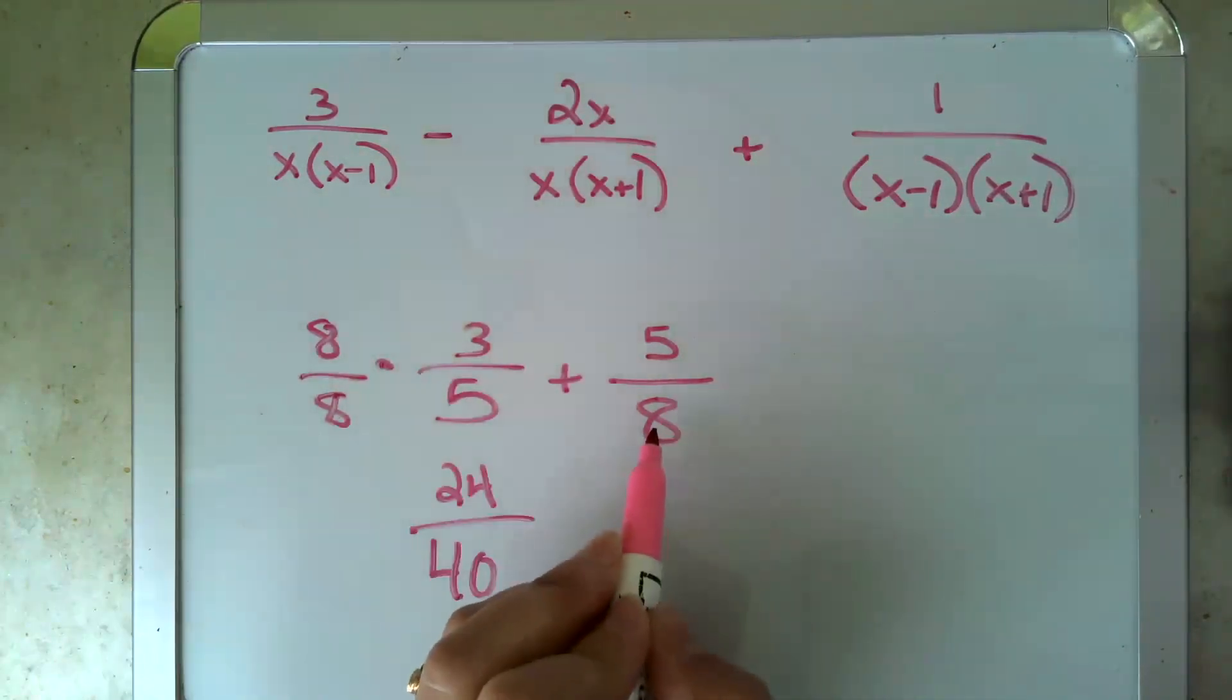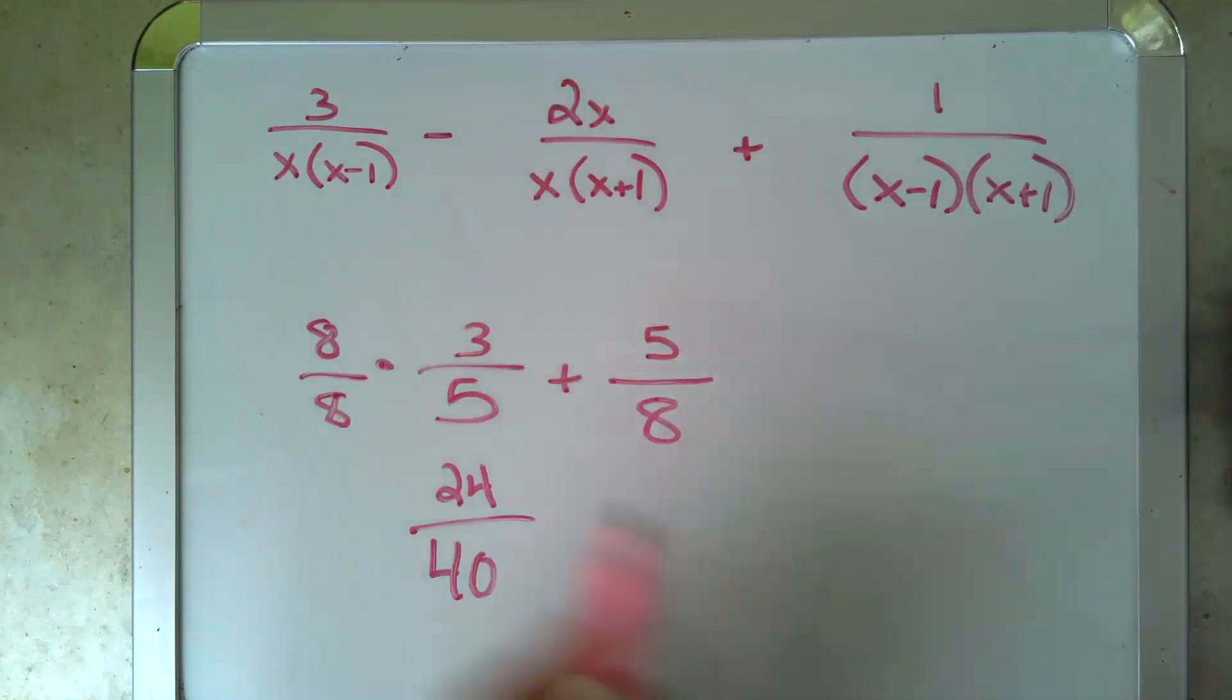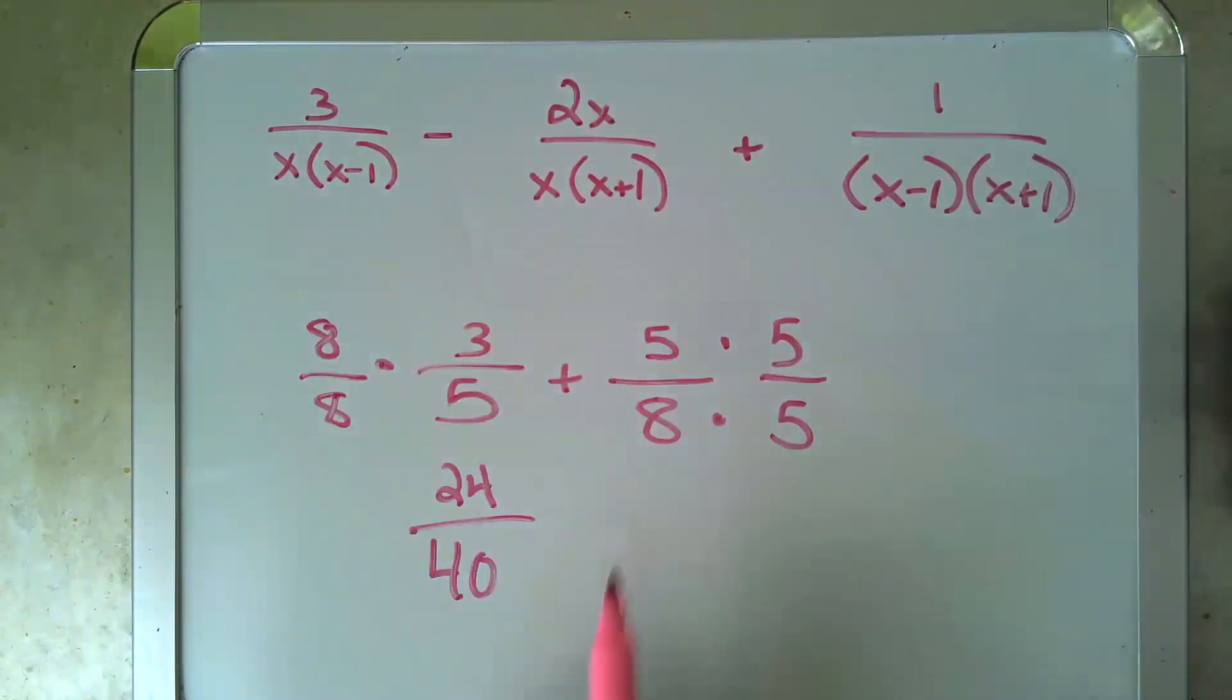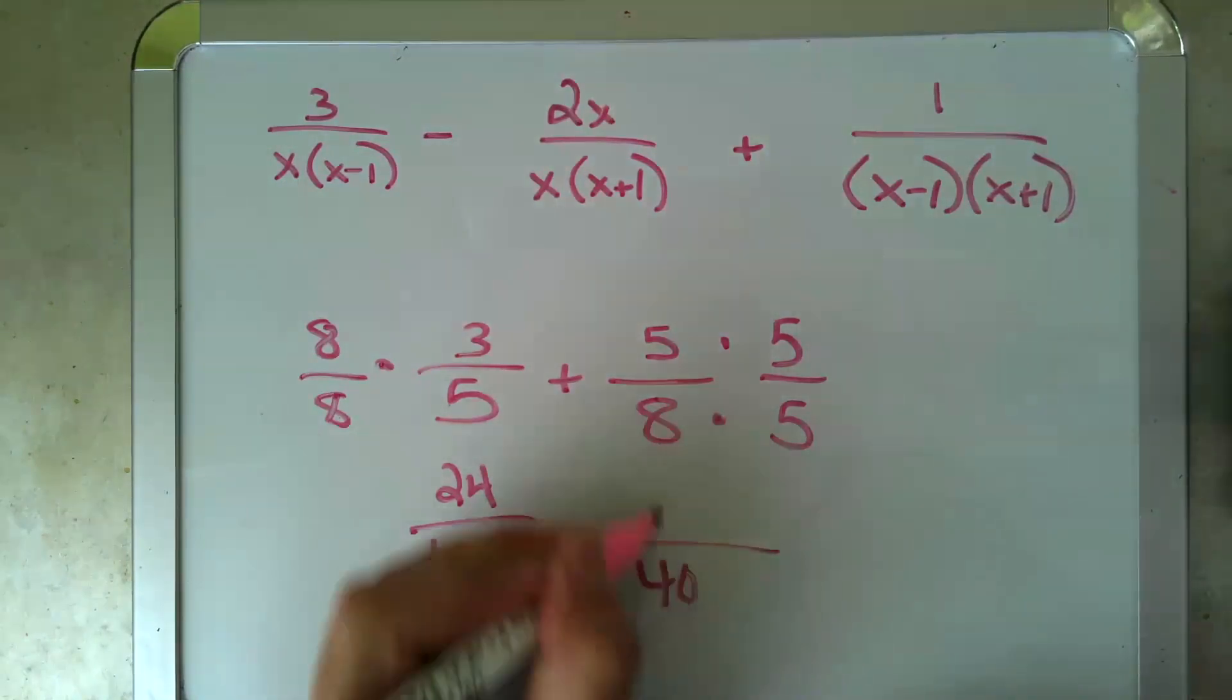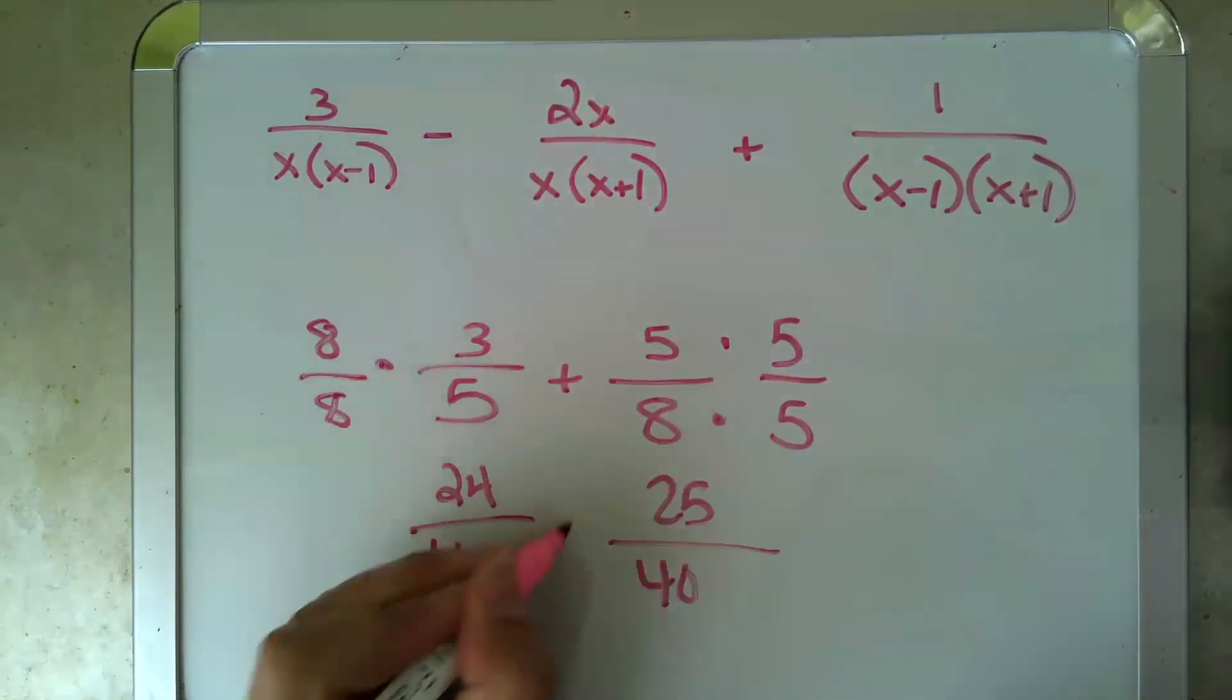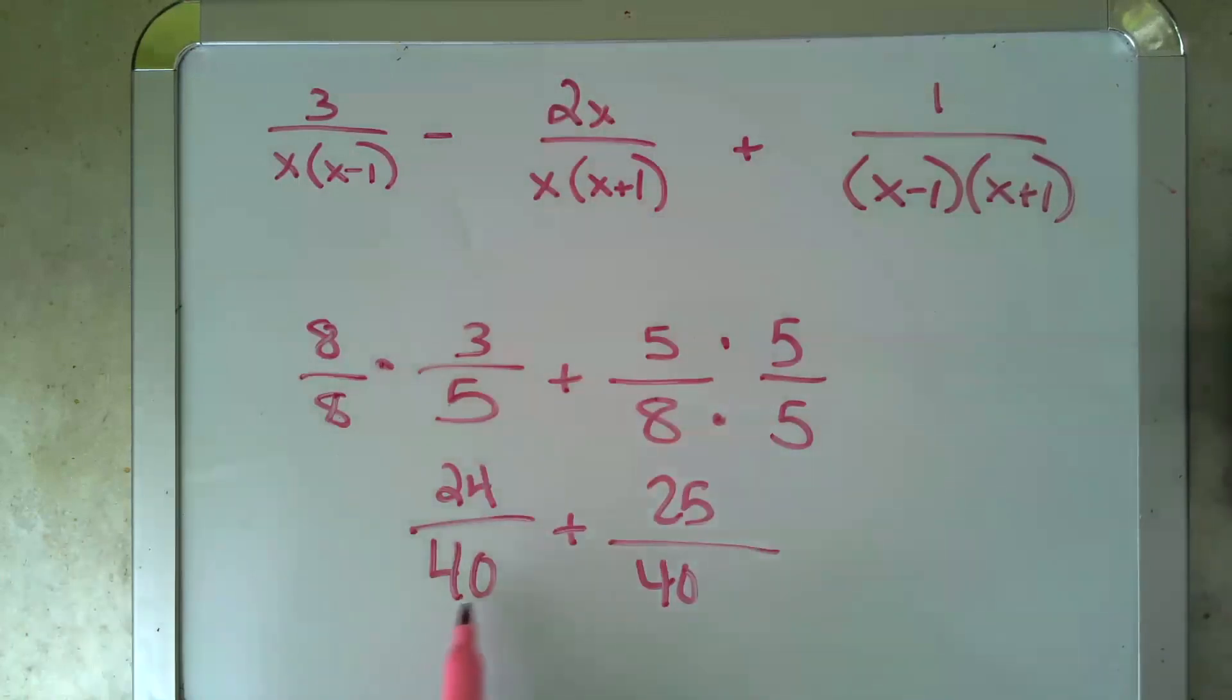And this denominator is missing a 5, so I would multiply top and bottom by 5 to give me the common denominator of 40 and the new numerator of 25. And now I can go ahead and add because I have a common denominator, right? And that would be 49 over 40.